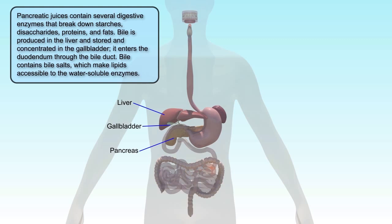Bile is produced in the liver and stored and concentrated in the gallbladder. It enters the duodenum through the bile duct. Bile contains bile salts which make lipids accessible to the water-soluble enzymes.